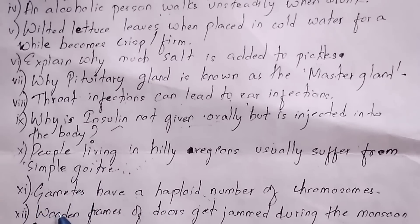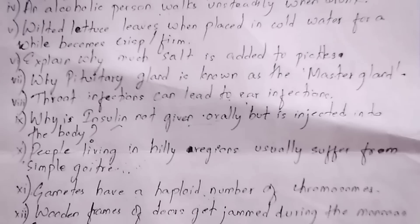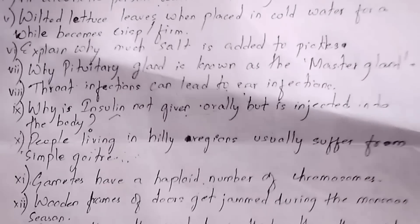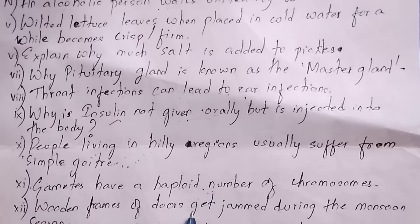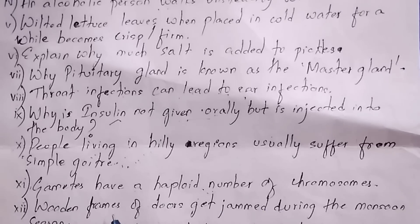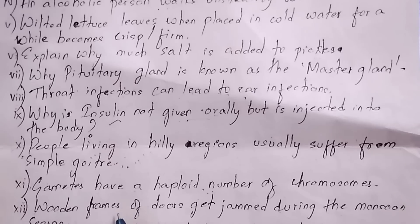Question 12: Why do wooden frames of doors get jammed during the monsoon season? Wooden doors get jammed during the rainy season due to imbibition, where the wood absorbs water and swells.